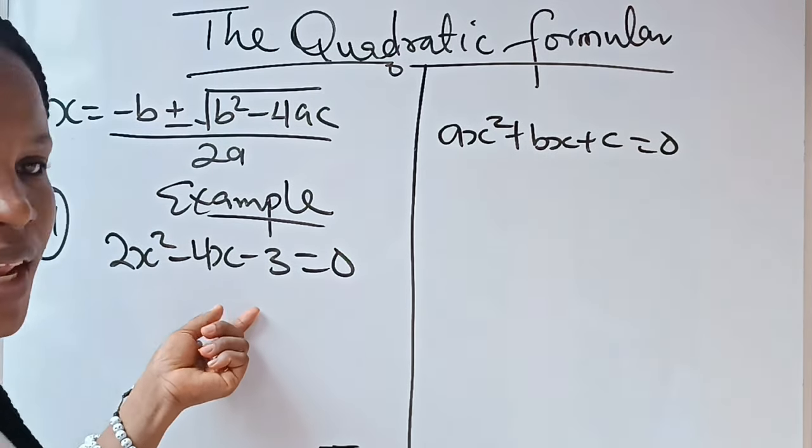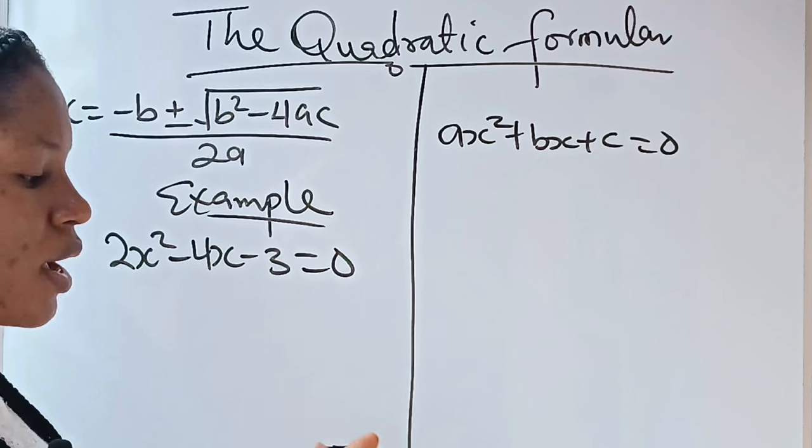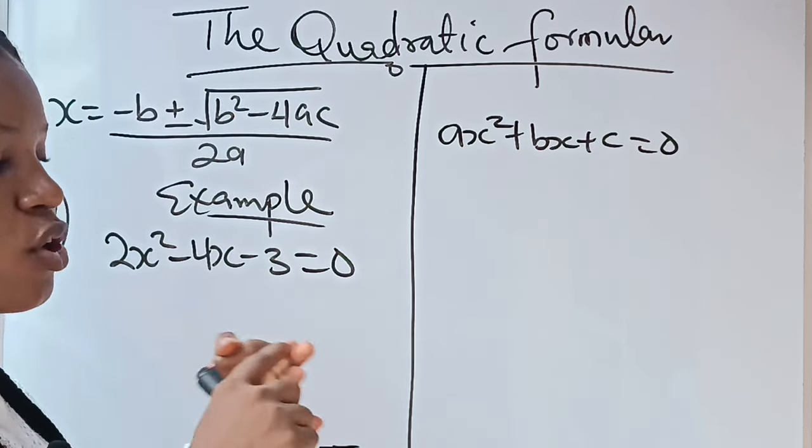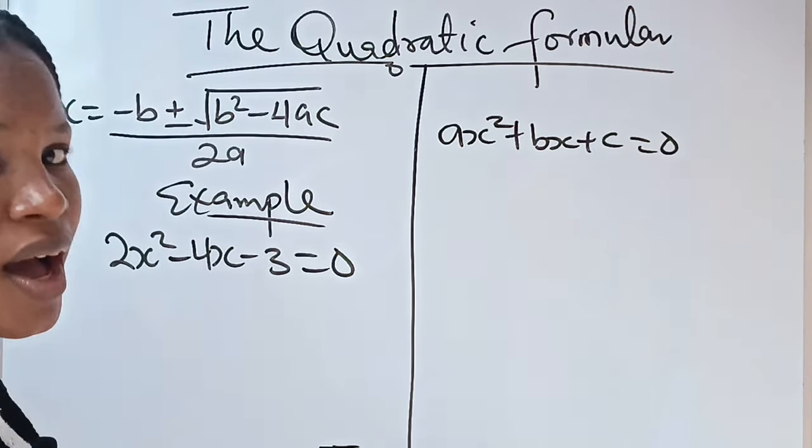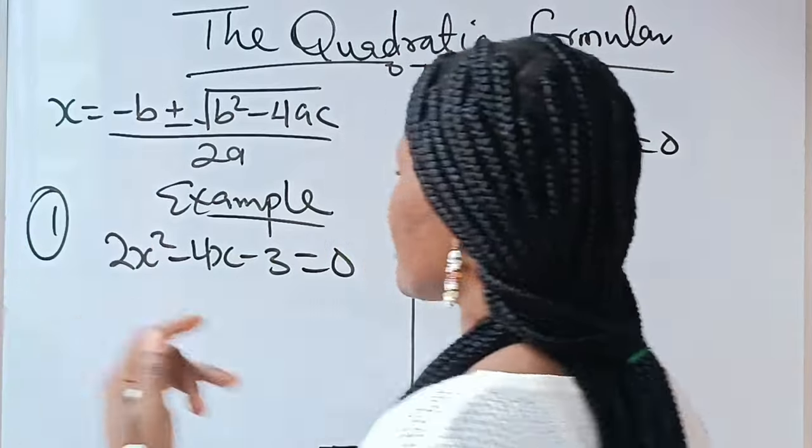Now, when you are given something like this, this is what you do. You bring out your A, your B, and your C. Then you substitute into this particular formula and use it to get the solution. Let's do this.